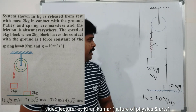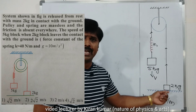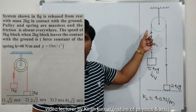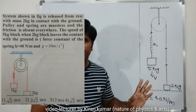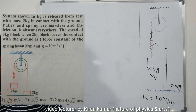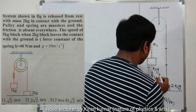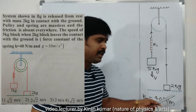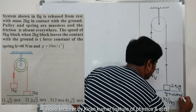The 2 kg block is in contact with the ground, and the 5 kg block is hanging with the pulley with the help of a spring of force constant 40 N/m. This is the given diagram in the question. We have to find the velocity of the 5 kg block when the contact is removed between the ground and the 2 kg block.